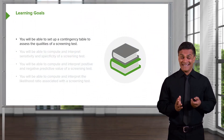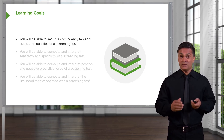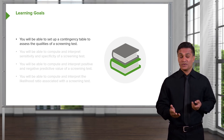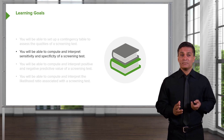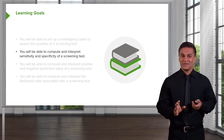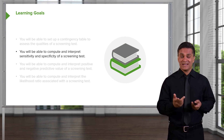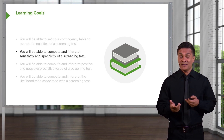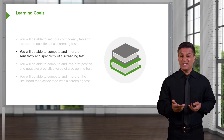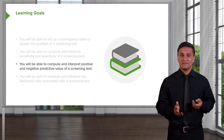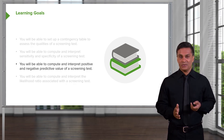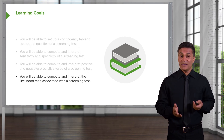You're going to learn how to set up a contingency table — that's how we put our numbers together to compute the appropriate indicators for the quality of a screening test. You're going to be able to compute and interpret the sensitivity and specificity, the positive predictive value and the negative predictive value of a test, and also the likelihood ratio.